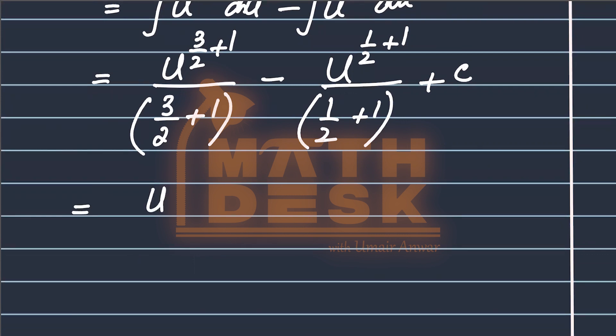तो यहाँ पर बनेगा, u raise to 5 upon 2, divided by 5 upon 2 minus, u raise to 3 upon 2 divided by 3 upon 2, plus constant of integration.